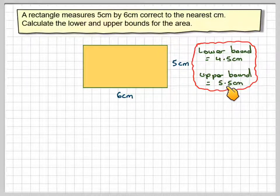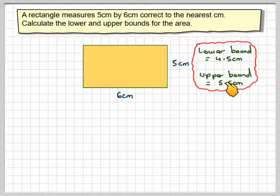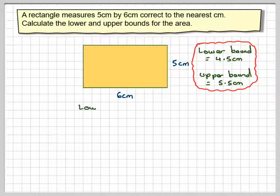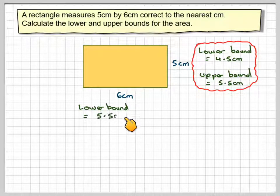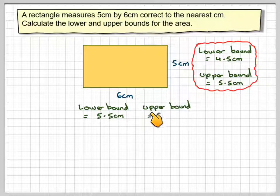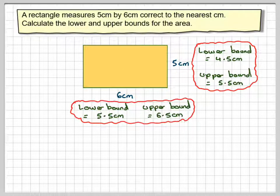We don't say 5.49. I know this will round up to 6, but this is known as the upper bound. Similarly, for the 6, the lower bound will be 5.5cm and the upper bound will be 6.5cm.